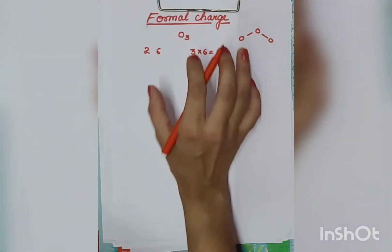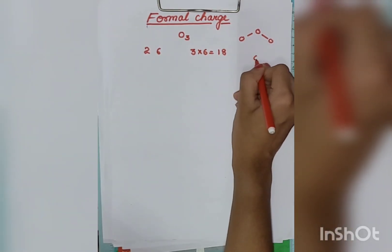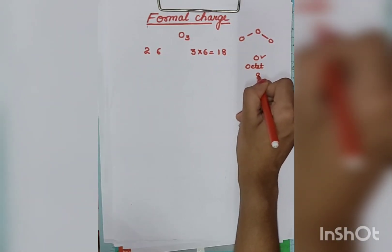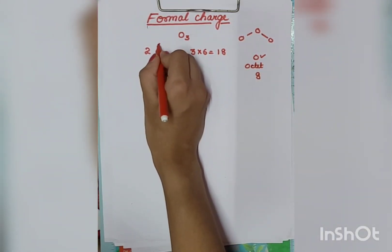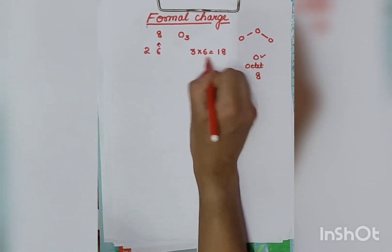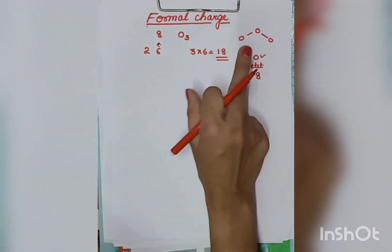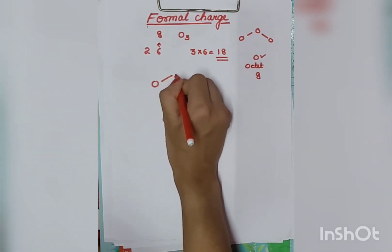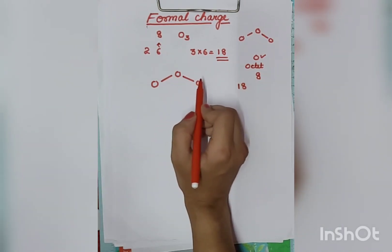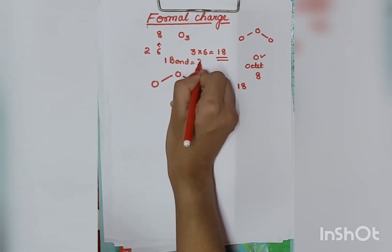We will distribute these 18 electrons among the 3 oxygen atoms so that each atom is complete. Octet means 8 electrons in the outer shell. Oxygen already has 6 electrons in the outer shell, so we need to complete it to 8. First we will make single bonds — one bond equals 2 electrons. So 2 bonds use 4 electrons, leaving us 14 electrons.